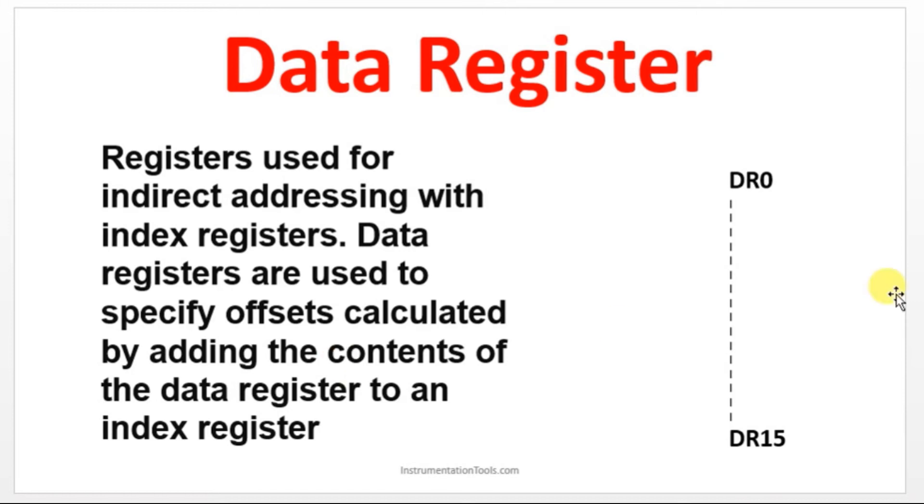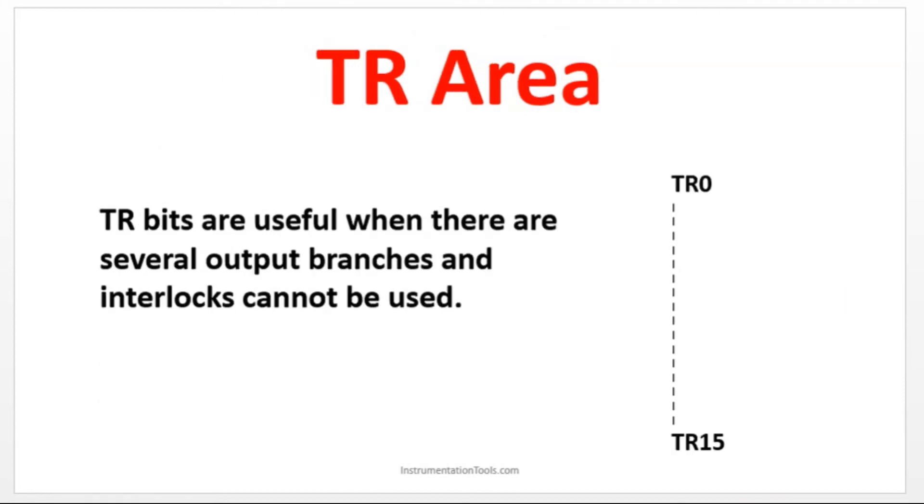We have a data register used for the indirect addressing, and TR bits. When you are using several output branches and interlocks cannot be used, in that case you can make use of this address to store the output value.